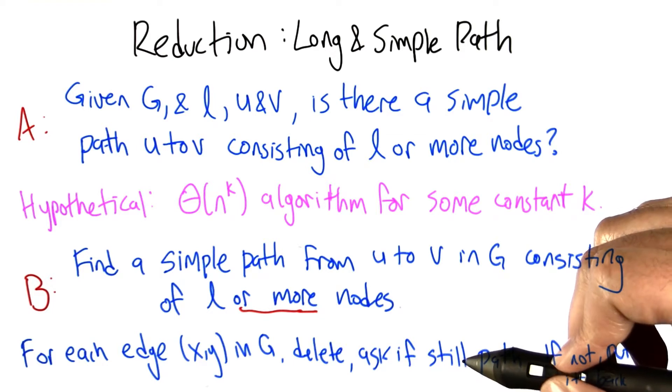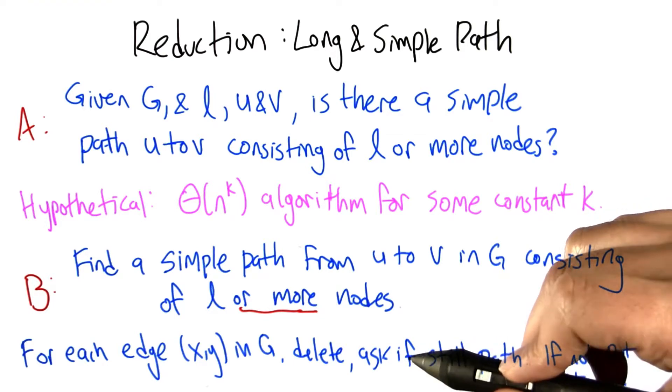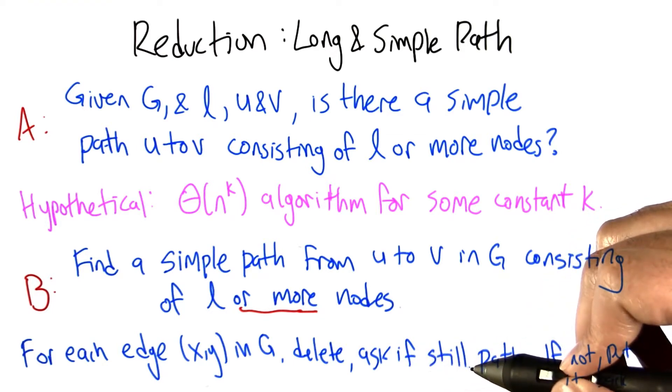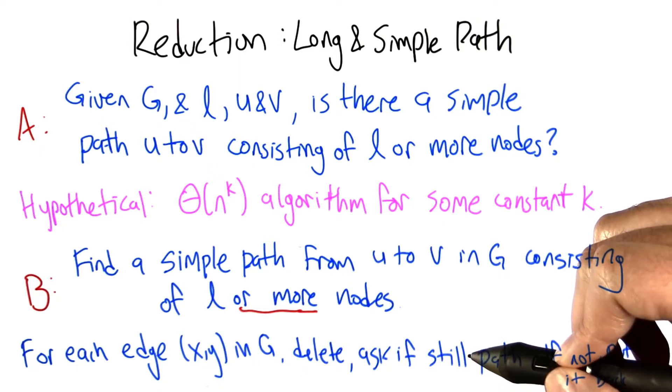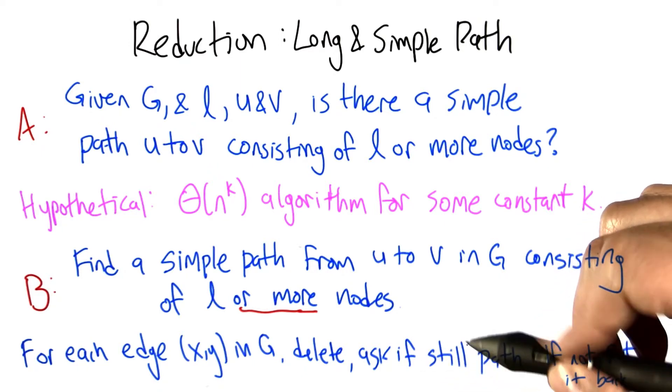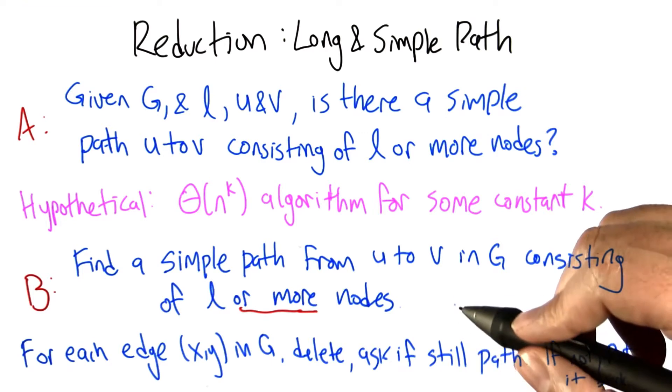Why? Because if there's any edges in there that's not on the simple path, then we can delete it and there still is a simple path. And certainly we can't delete any of the ones on that simple path and still have it work. So what's left is exactly what we need.